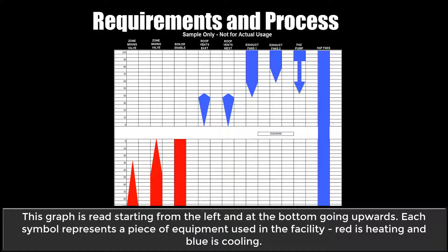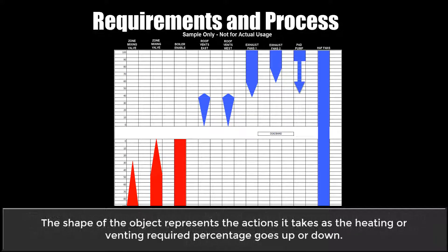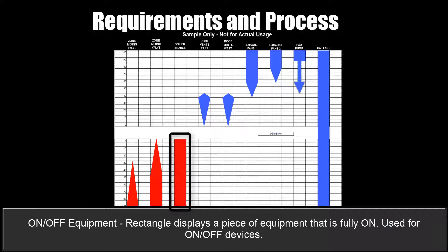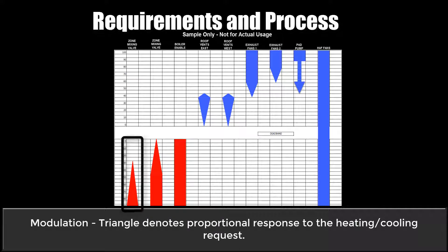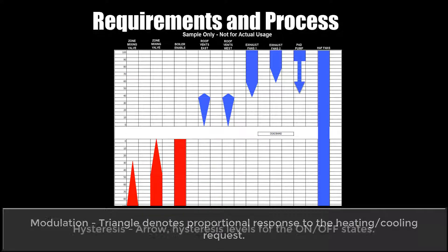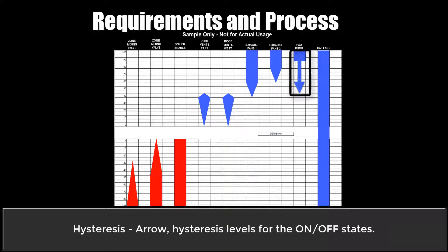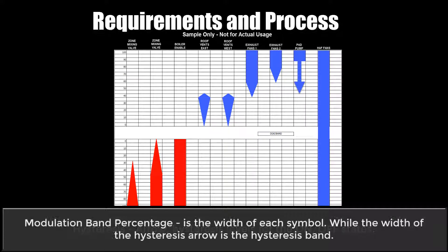A graphical look at the various sequence of operations, usually heating and ventilation. You can also use these diagrams for irrigation, light and shade, or relative humidity. Typically this is a wedge diagram containing shapes representing heating requirements in red and ventilating requirements in blue. On-off equipment is shown as a rectangle — displayed for a piece of equipment that's fully on, used for on-off devices. Modulation is shown as a triangle, denoting a proportional response to a heating or cooling request. Hysteresis is shown as an arrow, representing hysteresis levels for the on-off states. Modulation band percentage is the width of each image, while the width of the hysteresis arrow is the hysteresis band.